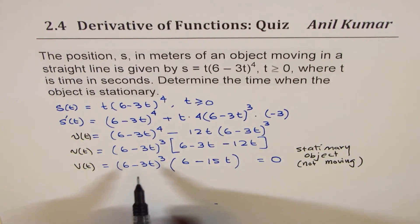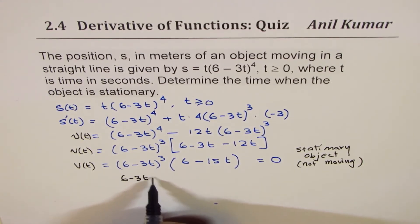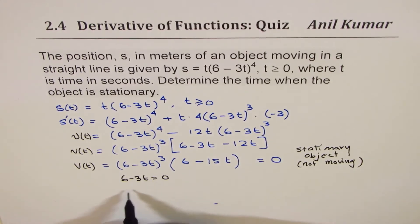Now these two factors could be zero, so first one 6 minus 3t equals zero means that t equals 6 divided by 3 or 2. So that is one value.